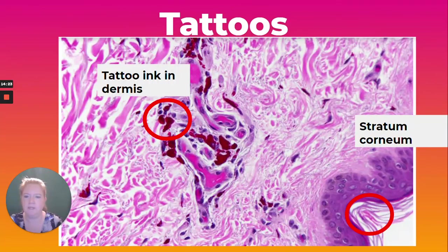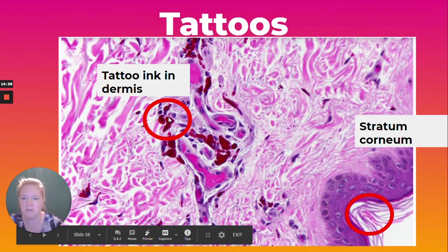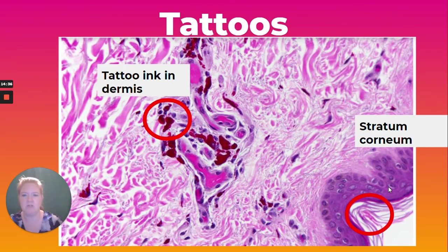Why do tattoos fade? The immune system is going to carry away some of that pigment over time, and UV radiation can also increase fading. Here you can see the tattoo ink in the dermis with the epidermis above it.